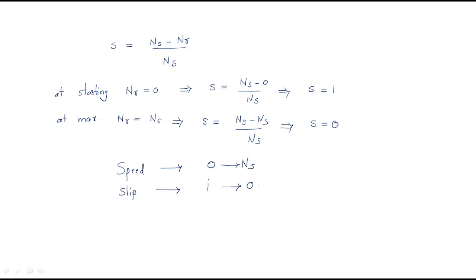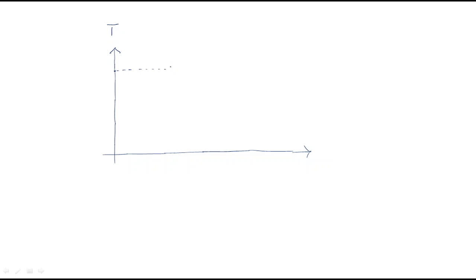Using the slip-speed relationship, we can draw the torque-slip characteristics. On the x-axis we take the slip, since slip varies, and on the y-axis we observe the torque. We then mark one important point — the maximum torque point.